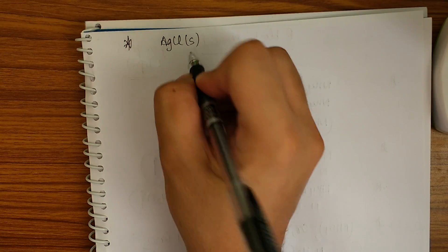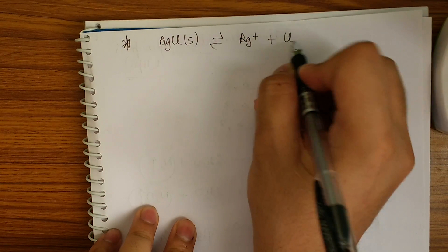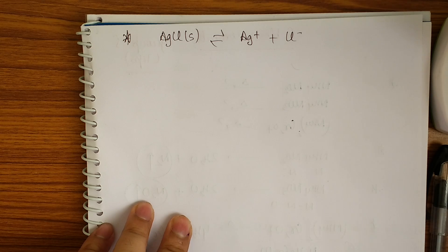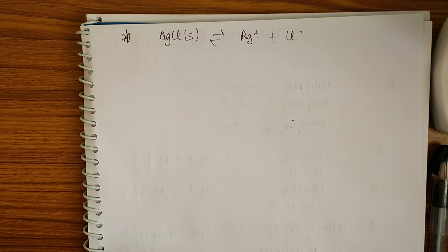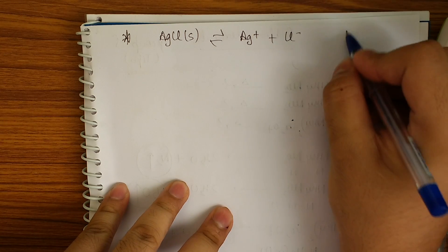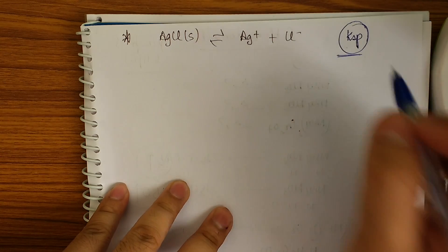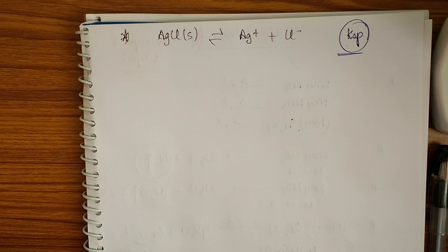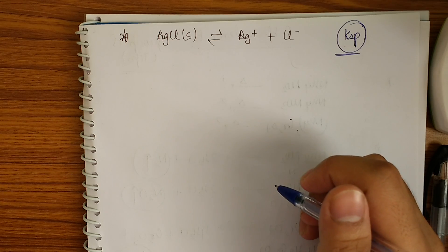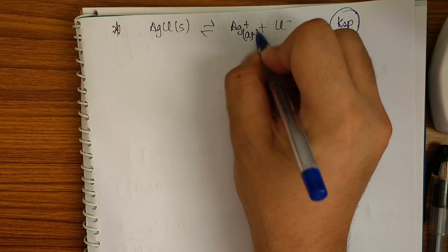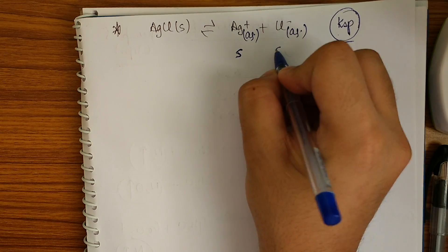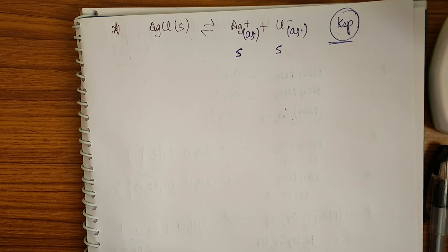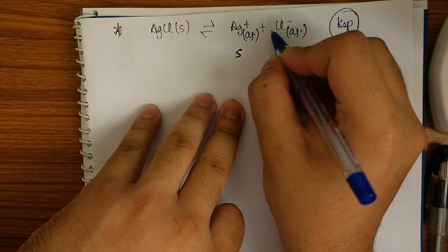Now let's move to the solubility product. Taking AgCl (solid) → Ag⁺(aq) + Cl⁻(aq). An important point: solubility applies to ions only, because only ions react with H⁺ and OH⁻ in water; the solid is not included in equilibrium calculations. The equilibrium constant here is called Ksp — analogous to Kc and Kp.